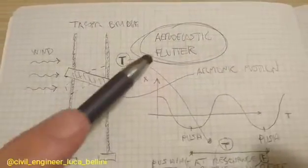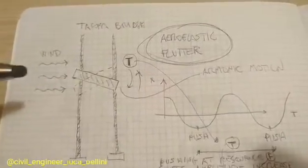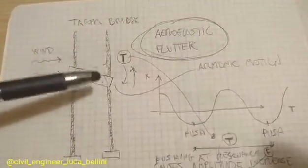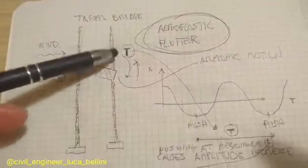The Tacoma Bridge collapsed because of aeroelastic flutter. Wind pushed the bridge deck for hours and it began oscillating with a period called T, this period.